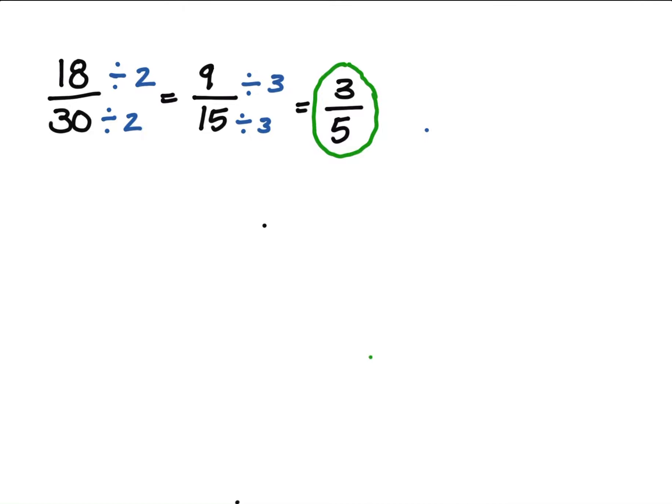Now if we look to see what numbers went into the numbers to get the 3 over 5, we have 2 went into 18 and then 3 went into 9—that's 6.